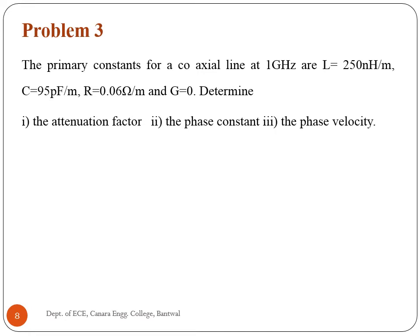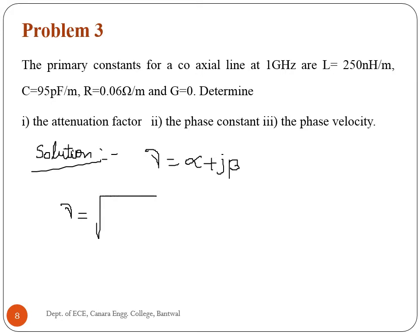Third problem: a coaxial line at 1 gigahertz has primary constants — L equal to 250 nano henry per meter, C equal to 95 pico farad per meter, R equal to 0.06 ohm per meter, and G equal to 0. Determine the attenuation factor, phase constant, and phase velocity. The propagation constant equals alpha plus j·beta, found from root of (R plus j·omega·L) times (G plus j·omega·C).